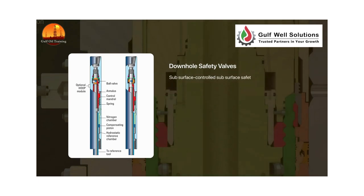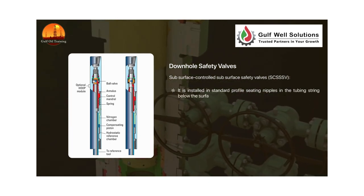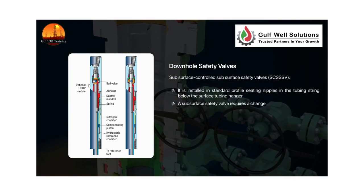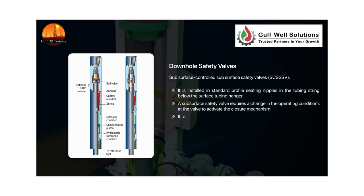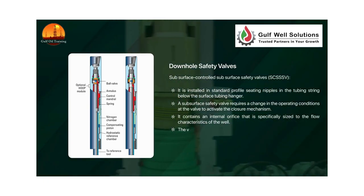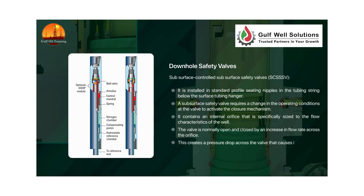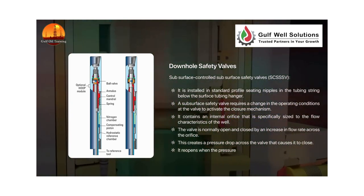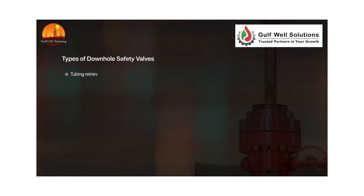The subsurface-controlled subsurface safety valve (SCSSSV) is installed in standard profile seating nipples in the tubing string below the surface tubing hanger. A subsurface safety valve requires a change in operating conditions at the valve to activate the closure mechanism. It contains an internal orifice specifically sized to the flow characteristics of the well. The valve is normally open and closed by an increase in flow rate across the orifice, which creates a pressure drop across the valve that causes it to close. It reopens when the pressure is equalized across the valve.